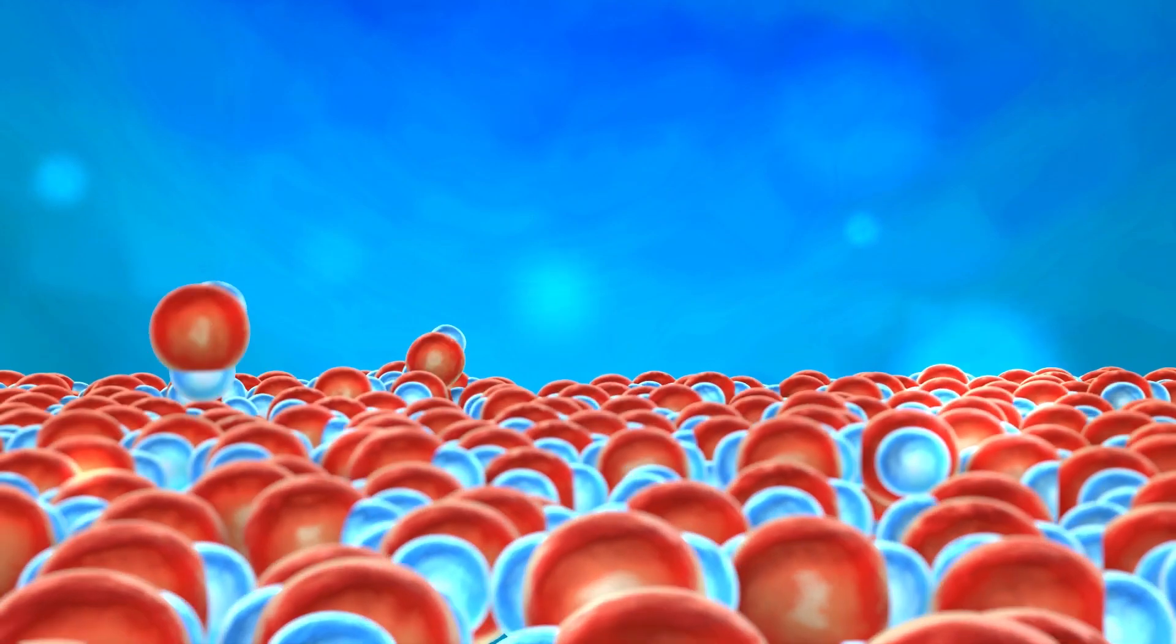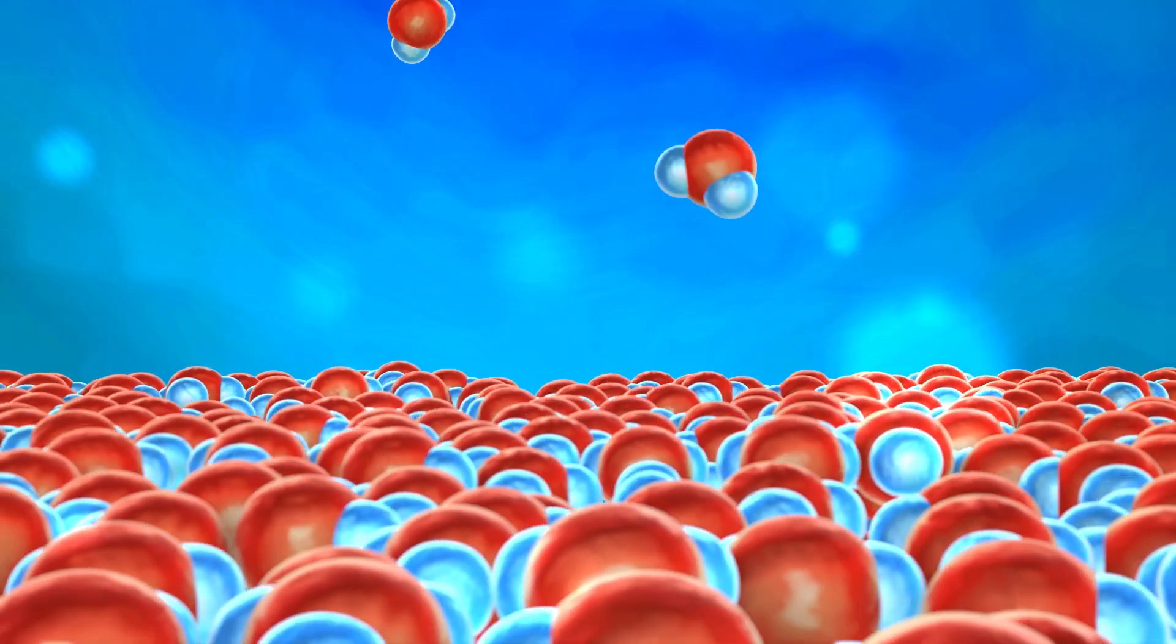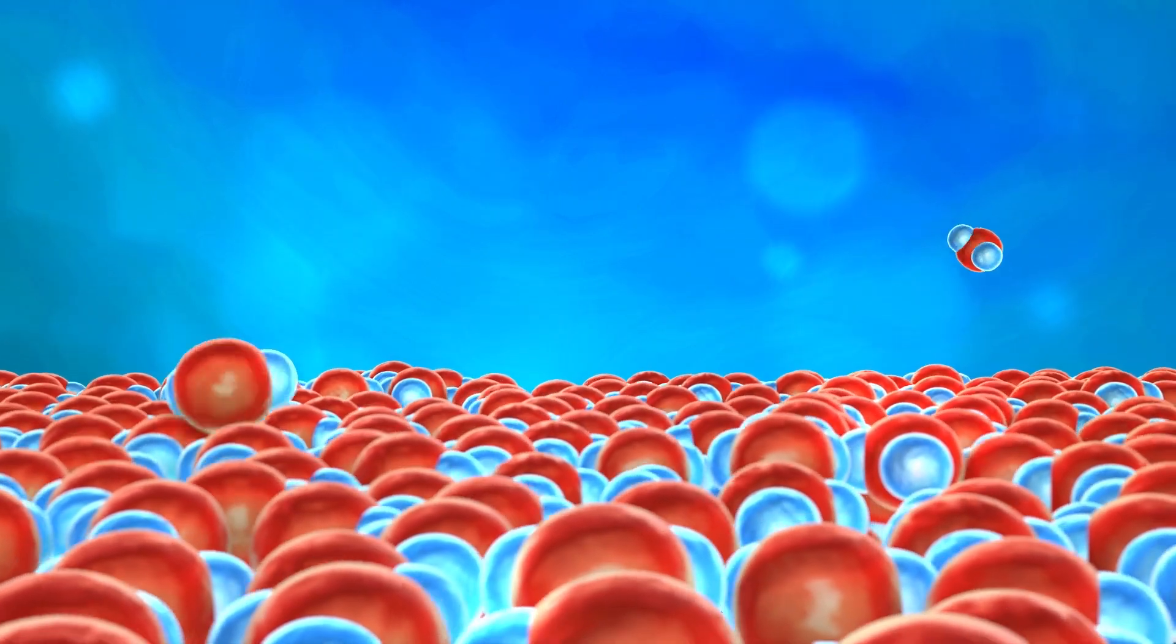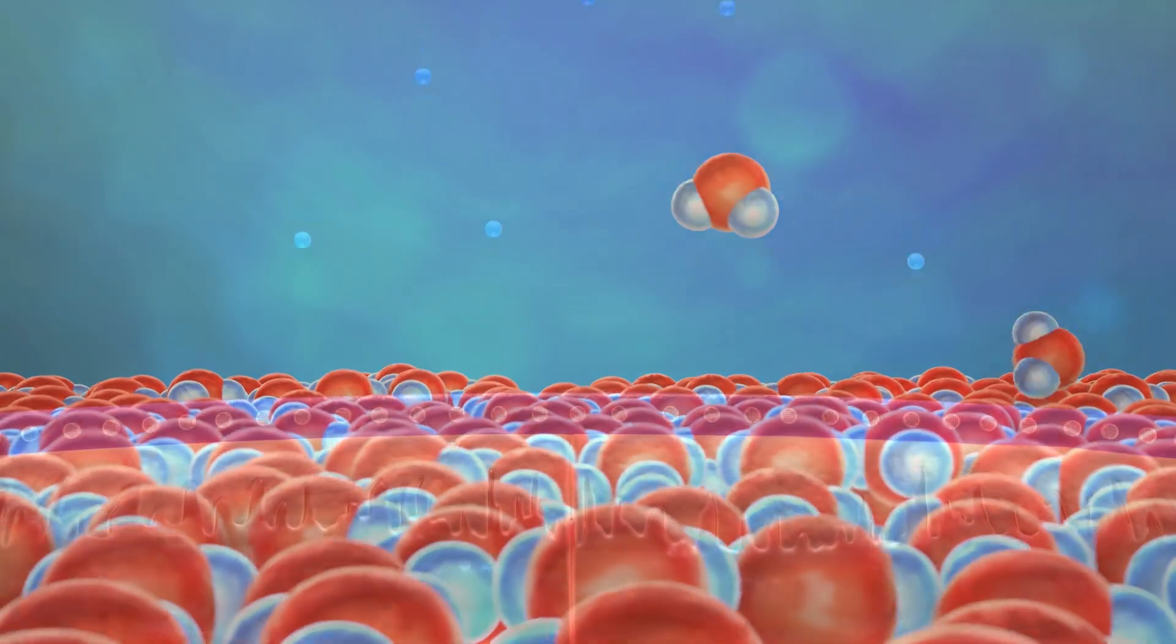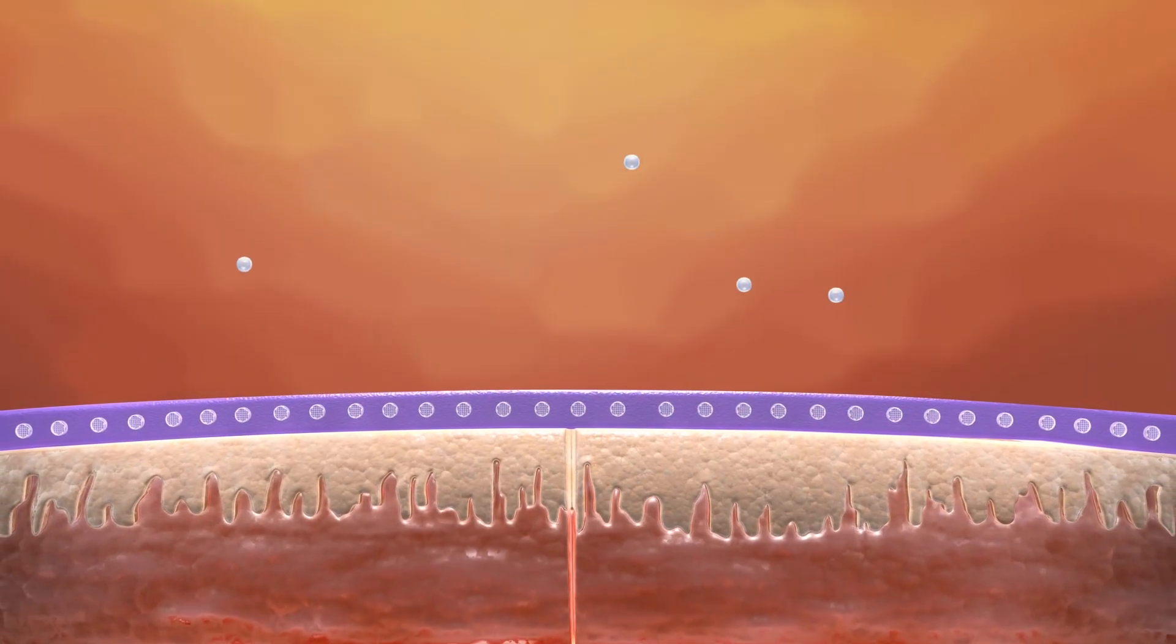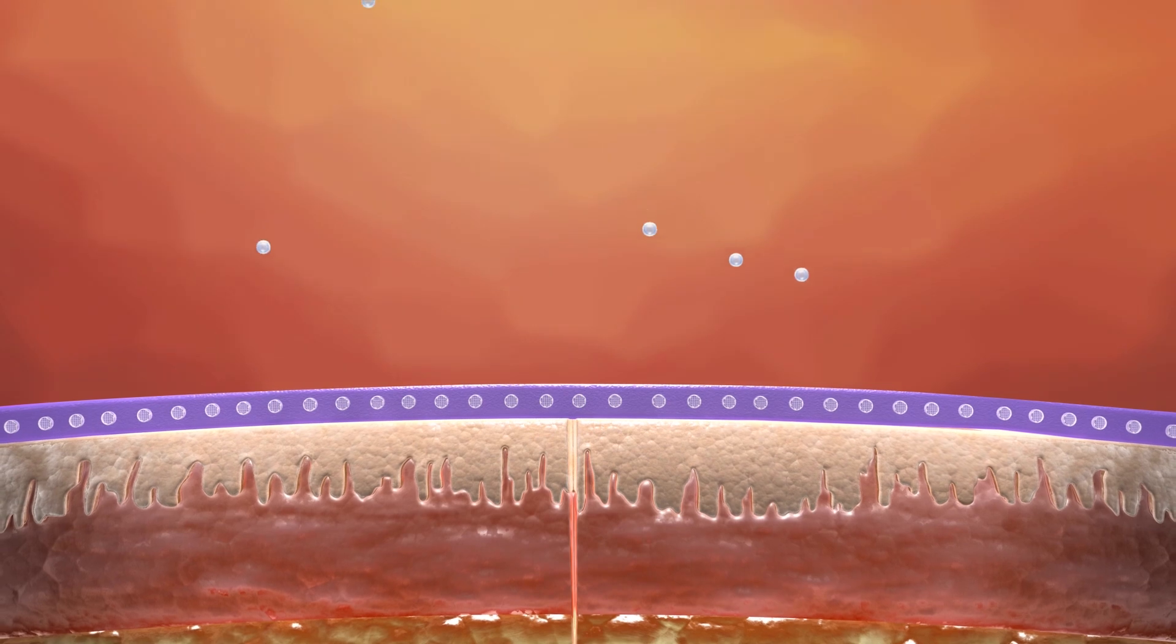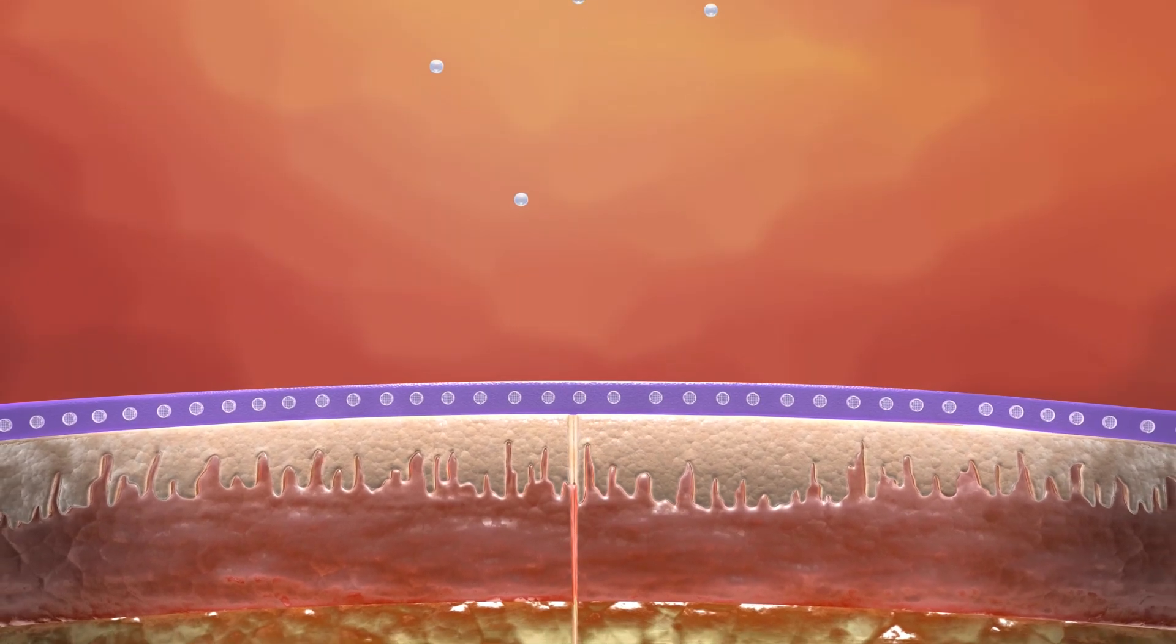But individual water molecules are a different story. Through evaporation, individual water vapor molecules escape, becoming small enough to pass through the Dermabond Prineo System barrier. This breathability is a benefit that allows excess water out while maintaining a moist wound-healing environment.